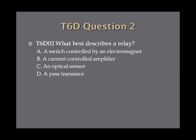Question 2. What best describes a relay? A. A switch controlled by an electromagnet, B. A current controlled amplifier, C. An optical sensor, or D. A passed transistor?